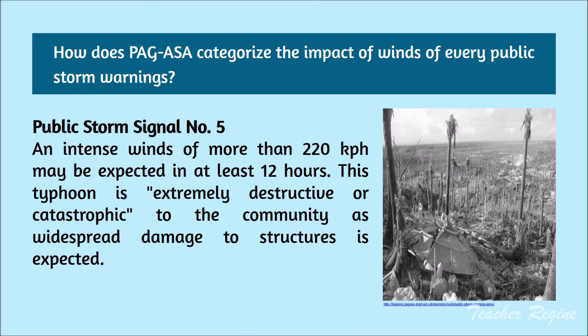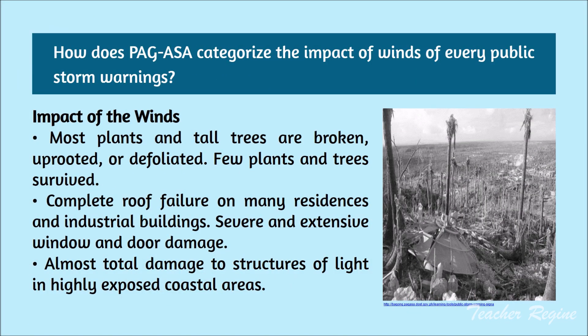Public Storm Signal Number 5: intense winds of more than 220 kilometers per hour may be expected in at least 12 hours. This typhoon is extremely destructive or catastrophic to the community as widespread damage to structures is expected. Most plants and tall trees are broken, uprooted, and defoliated. Few plants and trees survive. Complete roof failure on many residences and industrial buildings. Severe and extensive window and door damage. Almost total damage to structures of light in highly exposed coastal areas.